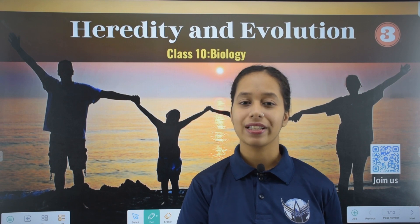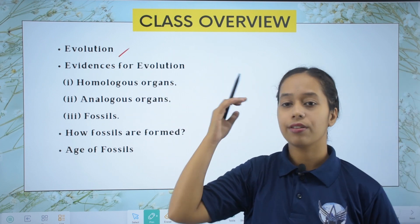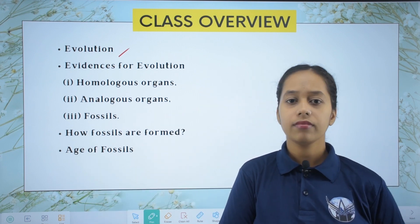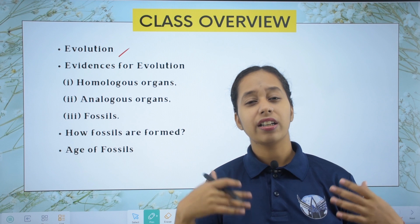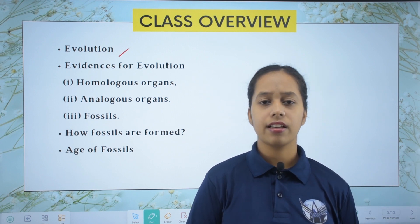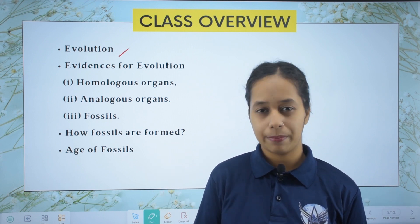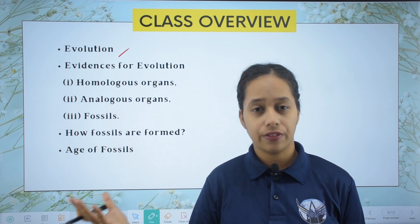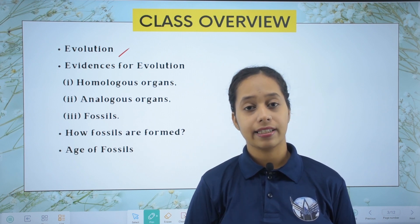Today we will be starting evolution. In one minute, here is a short summary: on our earth we have a huge number of living organisms — different types of plants and different types of animals. The number of plants and animals is very large, and their varieties are also very large.